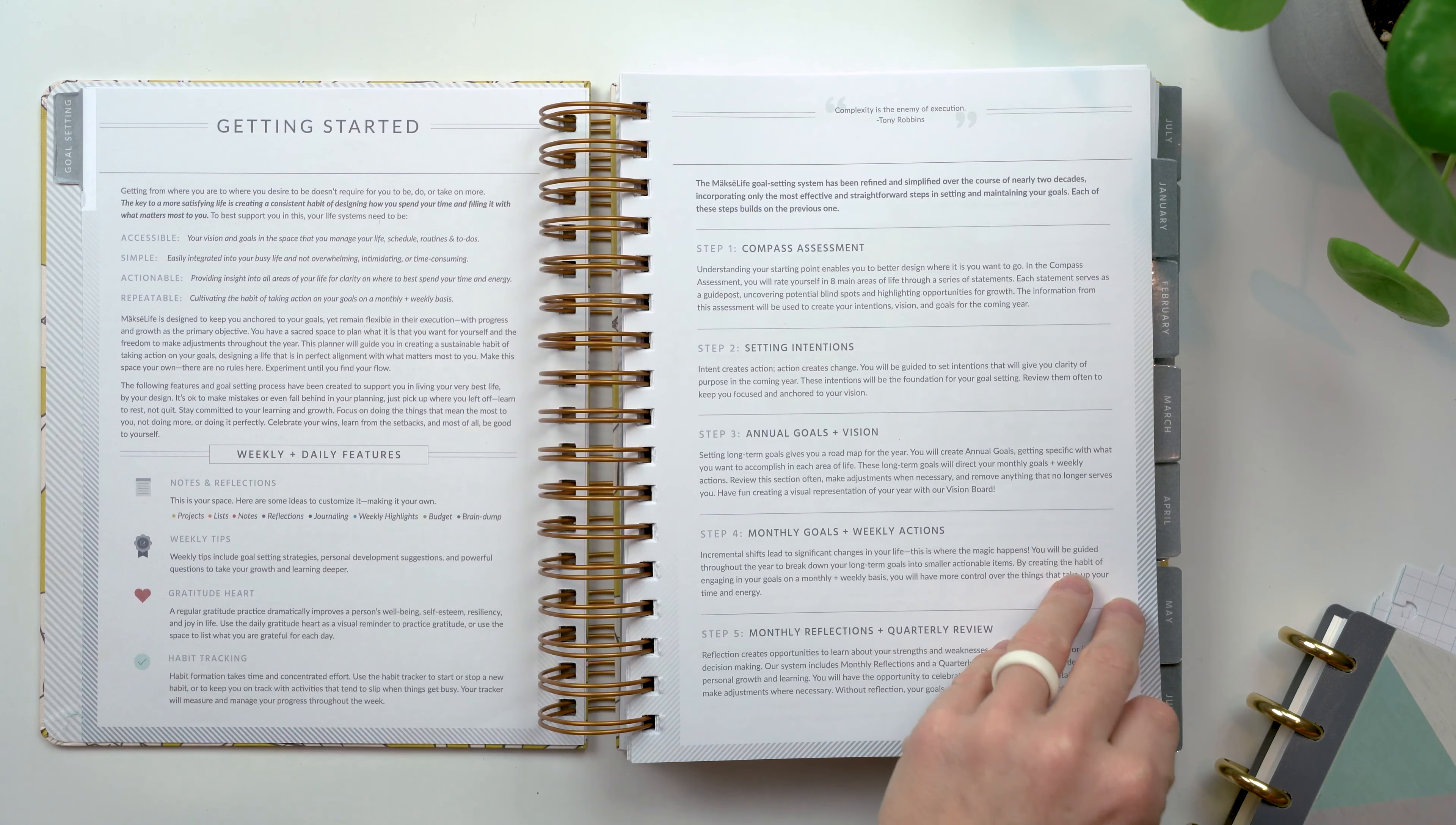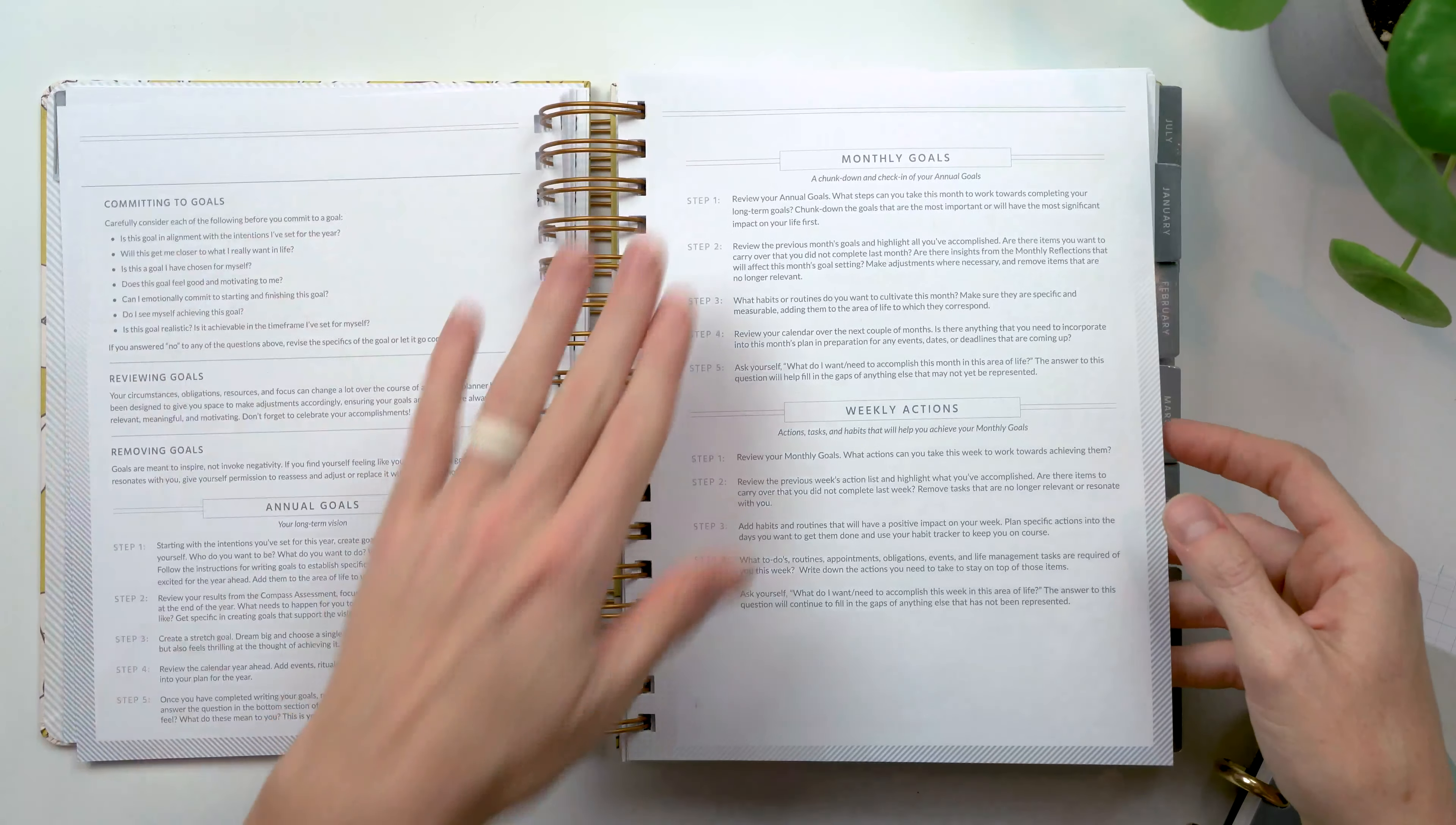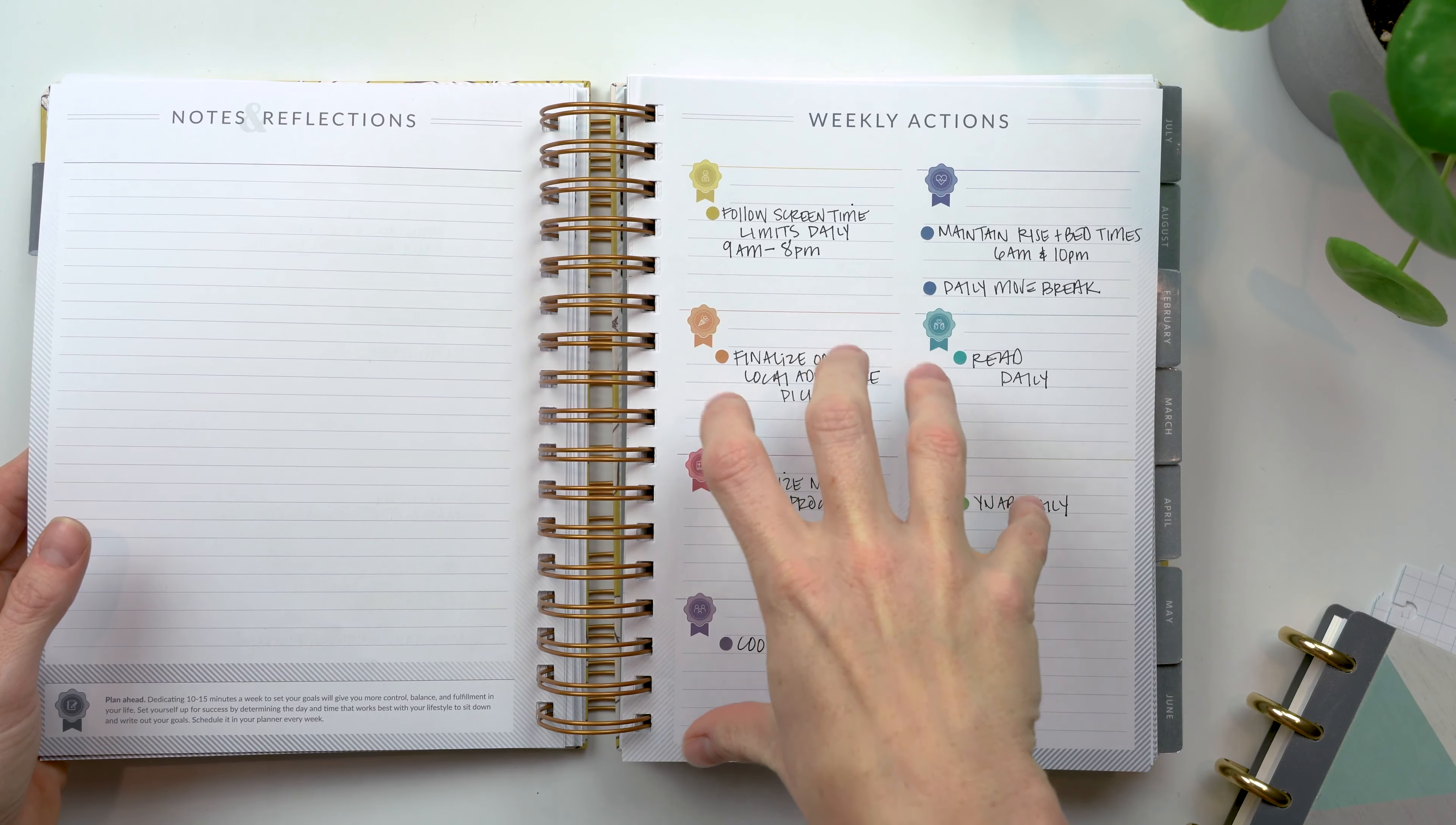So she walks you through the different system, like the different steps. You go through your assessment. You go through marking your scores on your life compass and where you want to be. You set intentions. You pick a word for the year. Then you go into some instructions on monthly, annual, weekly goals. You set your annual goals in each category. You have a vision board, some goal tips, and then you go into monthly goals, and then you go into weekly goals. So you could see this is a much more robust goal-focused weekly planner.